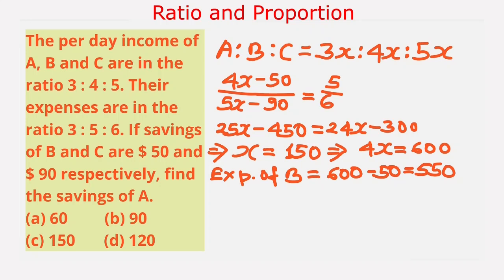The expenses of B are 550, and from the given ratio, the expenses are in the ratio 3:5:6. This means 5 parts, which is the expenses of B.